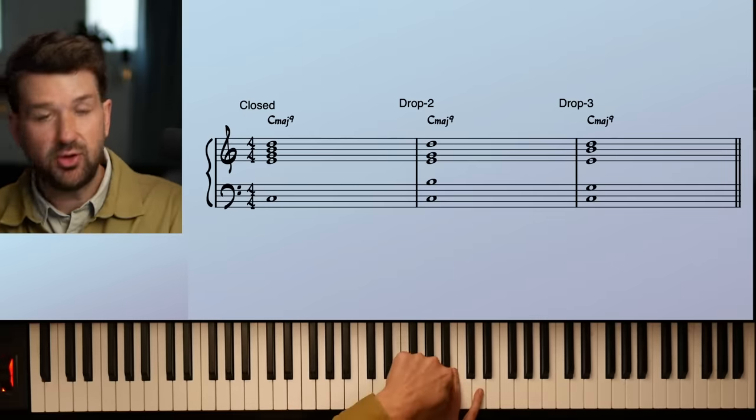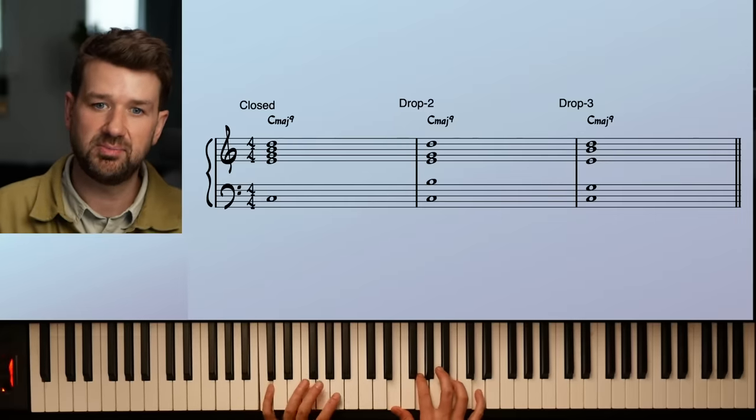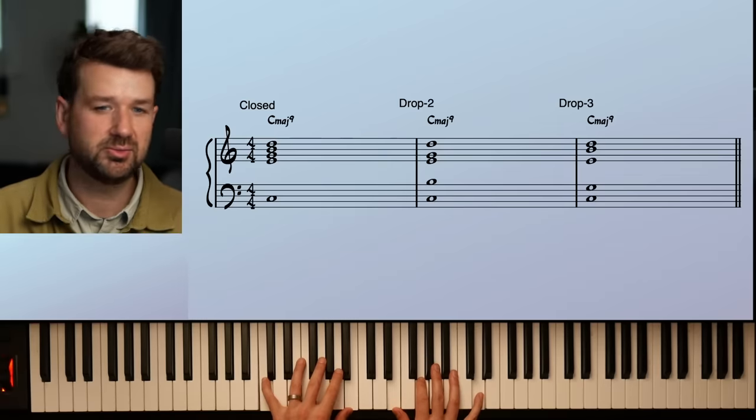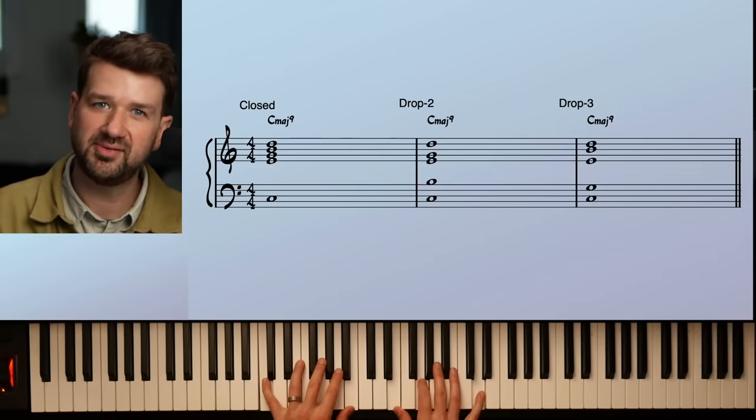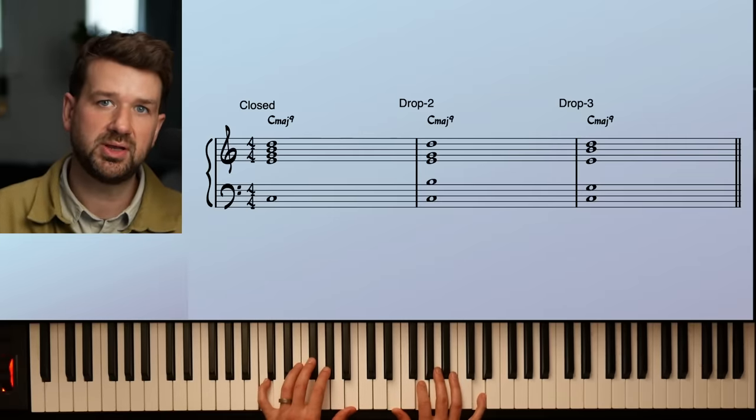Drop two, we take the second note from the top, no matter what it is. In this case, it's the seventh, the B. We drop it down an octave. We put it in the left hand, and lo and behold, we've got this beautiful voicing. Look at this. Now, notice how everything's spread out here.